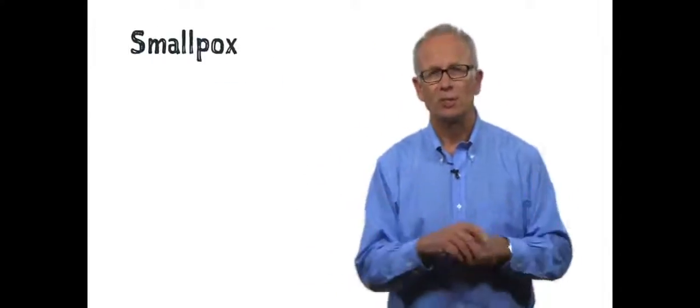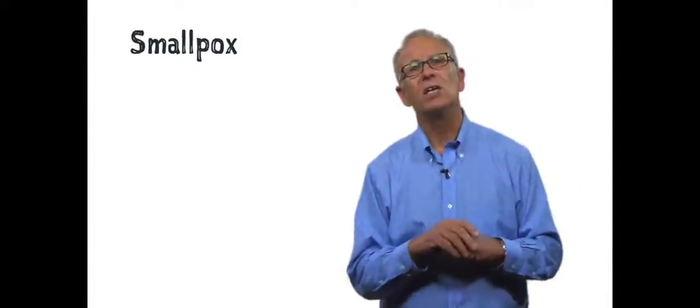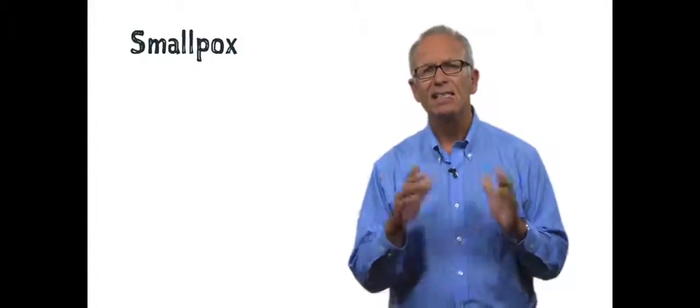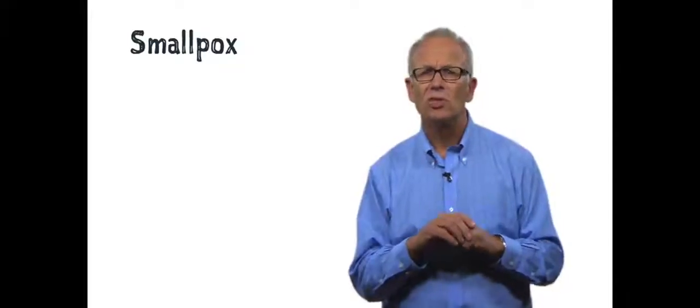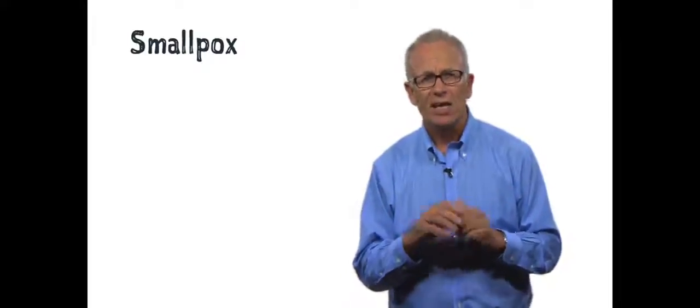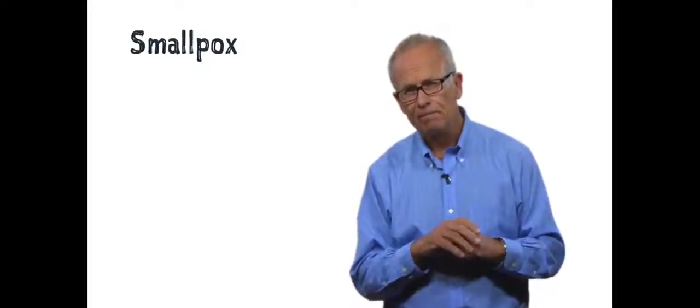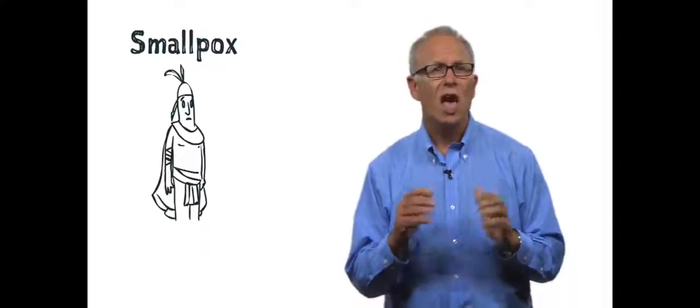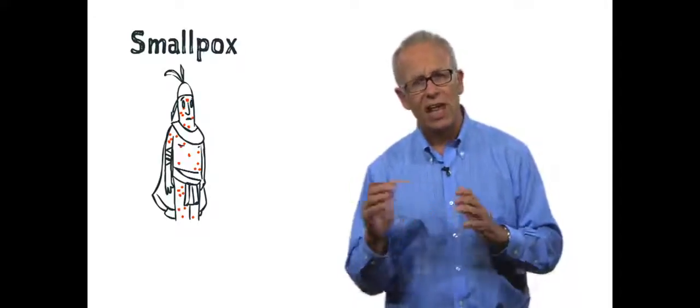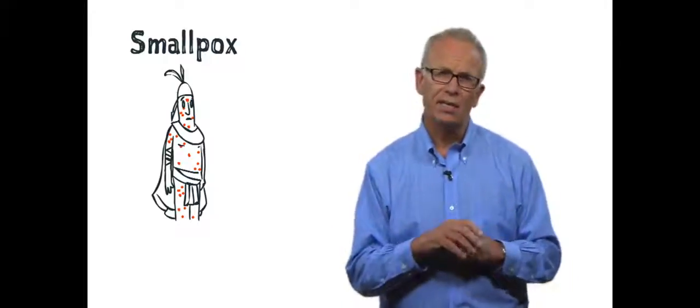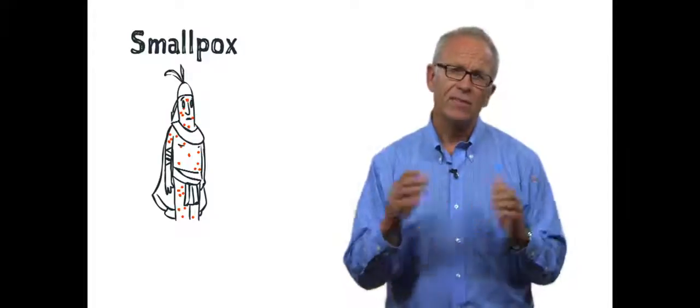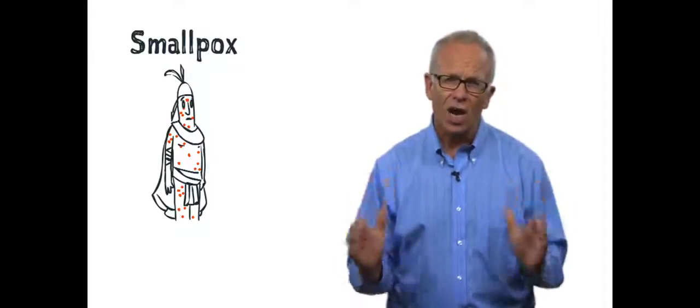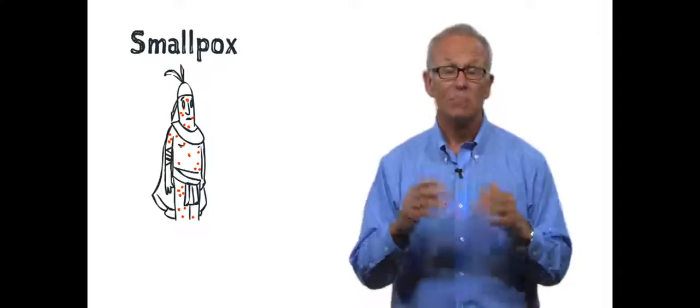Another one, smallpox, has had a profound effect on the history of humans. It decimated the Ethiopian soldiers in the Elephant War in Mecca in 568 AD. In 1502, it was introduced into the Western world, where it swept through the Amerindian tribes and resulted in the collapse of both the Aztec and the Incan empires. In 1738, it killed half the Cherokee nation. Where did it come from?